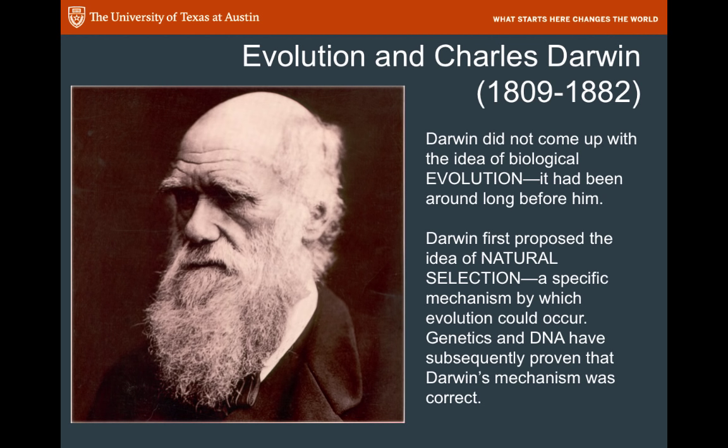So where did this idea of evolution come from? We often tie it with Charles Darwin, a scientist born in 1809 and died in 1882. Darwin did not come up with the idea of biological evolution — it had been around a long time before him. Darwin's contribution was to propose a mechanism for evolution: the idea of natural selection, which is a specific way that evolution could occur. Later, genetics and DNA proved that this mechanism is indeed correct.